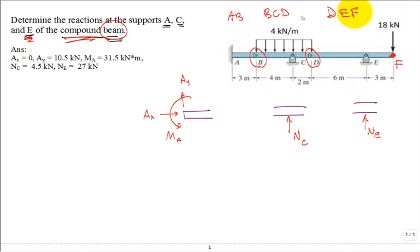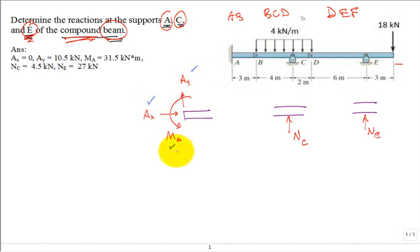We're studying rigid bodies — no deformation in the beam; that's saved for the next course in solid mechanics where we get deflection in beams and columns. In statics it's just rigid body equilibrium. So how do I solve for the reactions at A, C, and E? I'm looking for A_x, A_y, M_A, N_C, and N_E — five unknowns, five solutions needed.